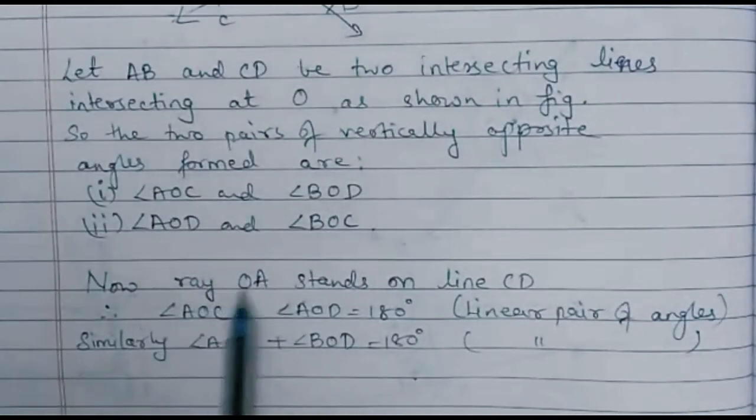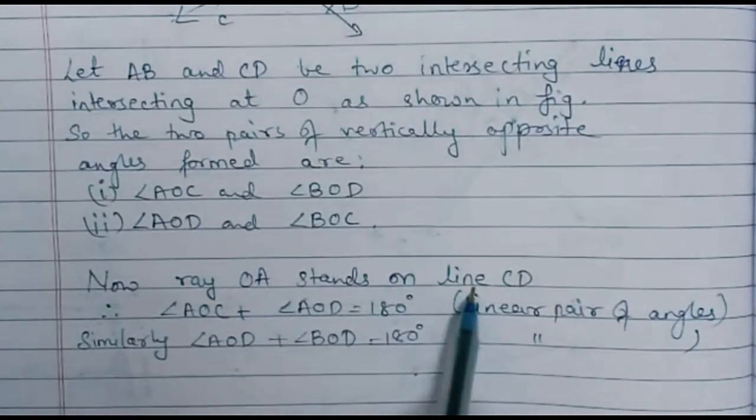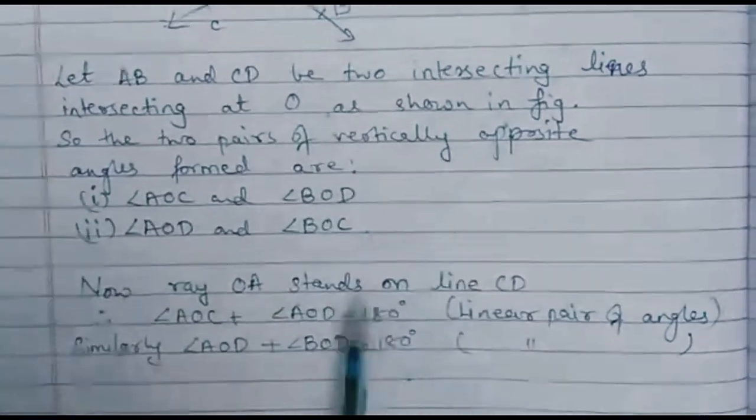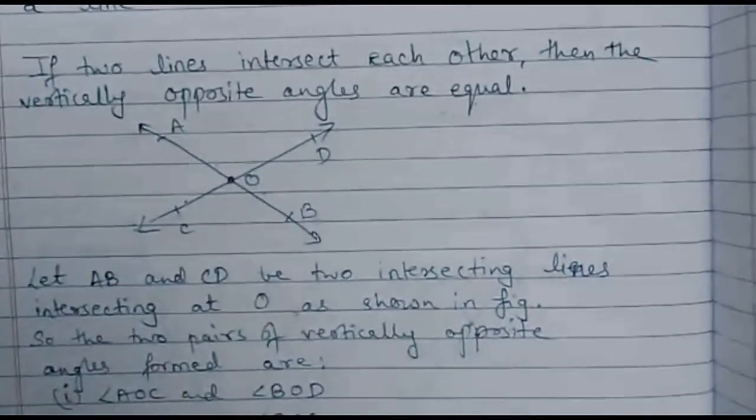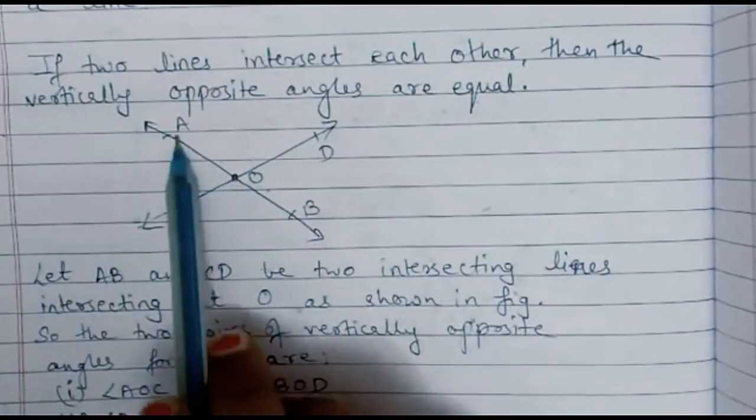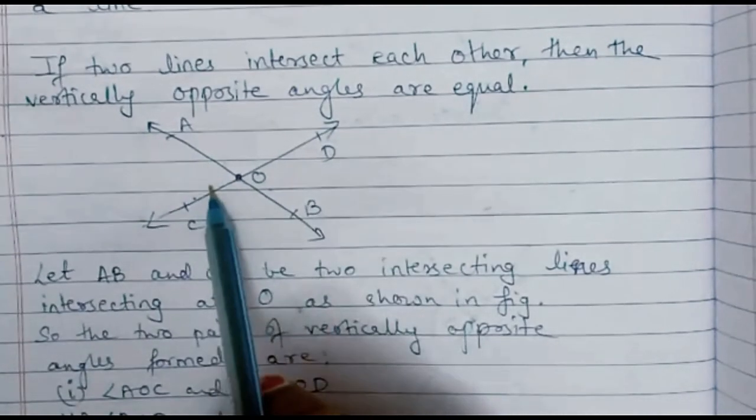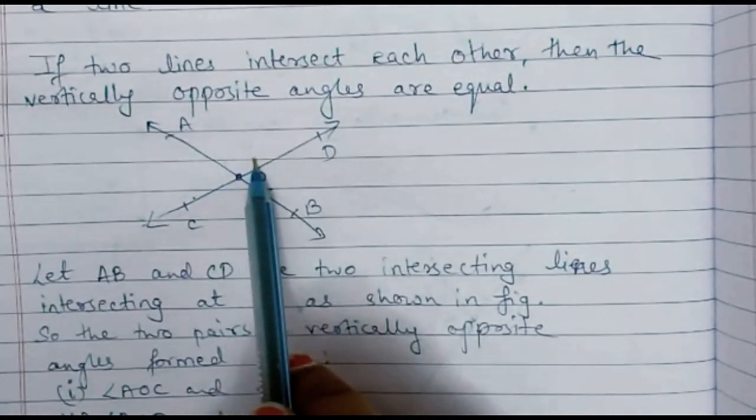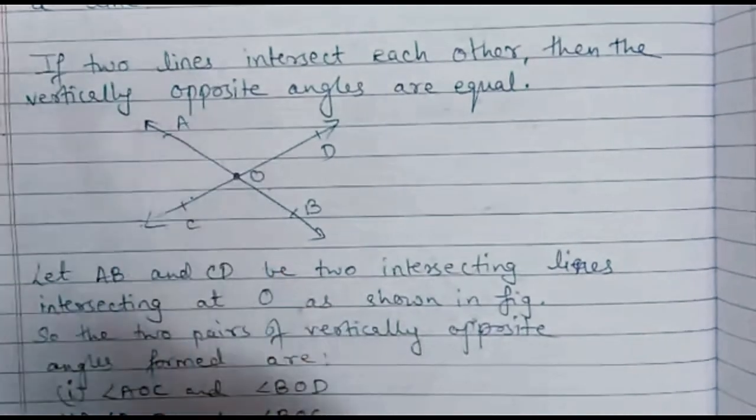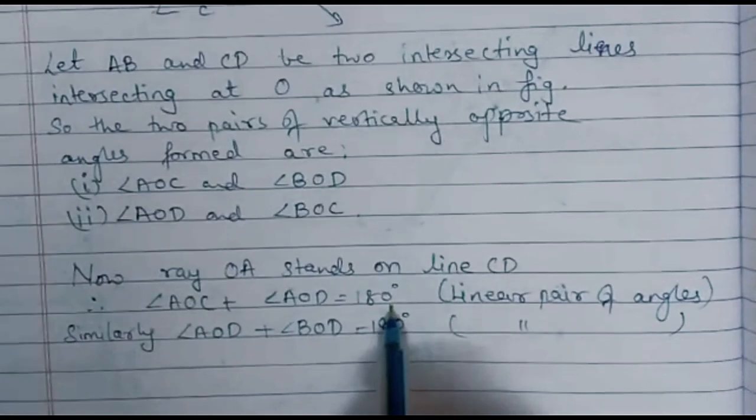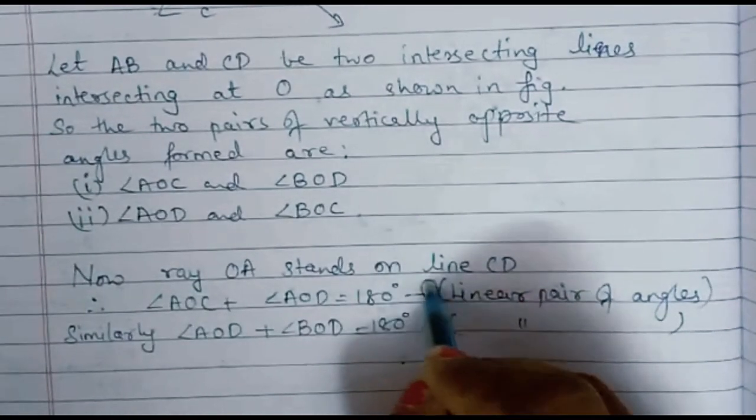Now ray OA stands on line CD. We can see in the figure, ray OA is on line CD. So angle AOC and angle AOD will be forming linear pair. So by axiom number 6.1 their total will be 180 degrees, and this we will take as equation number 1.